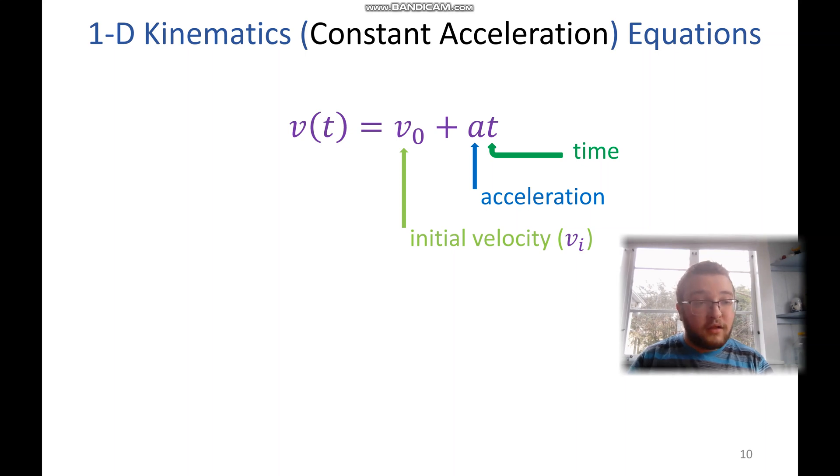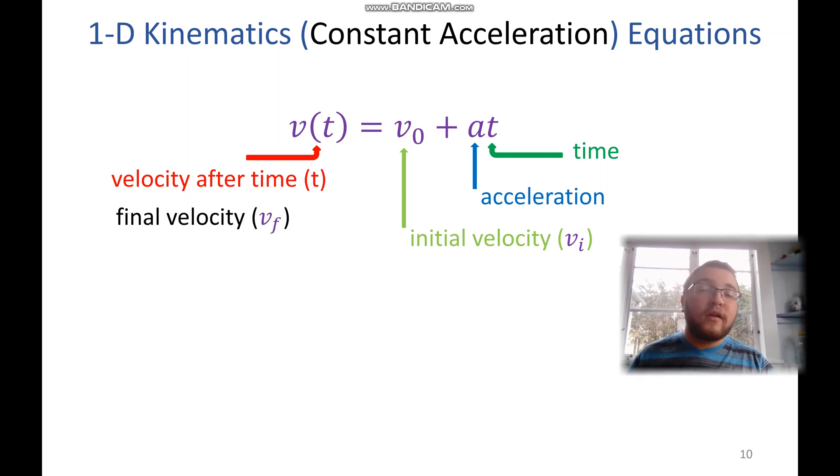or some places will start to number the velocities in order. So initial would be v1. And this v as a function of t means that we're plugging in our time however long it took, and we get that velocity. Sometimes we also describe it as the final velocity, vf.